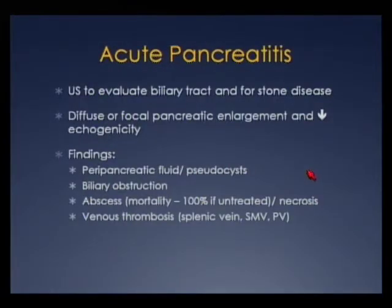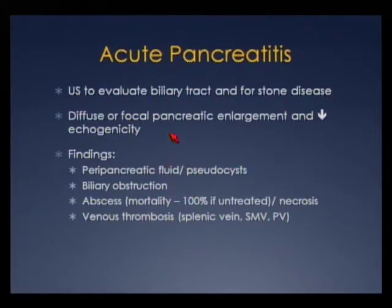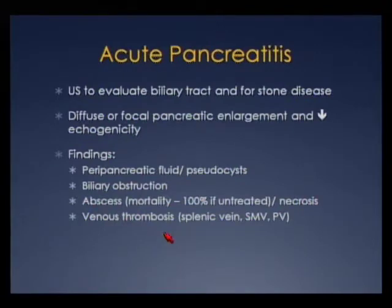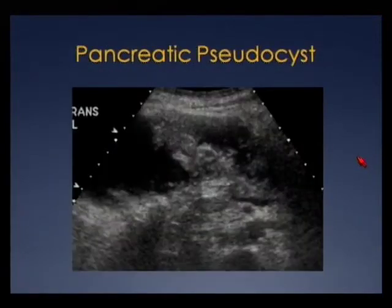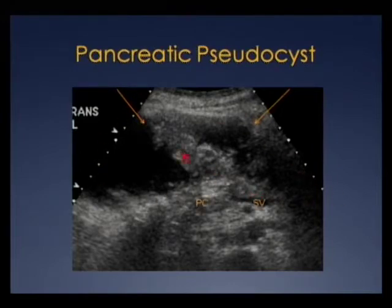Knowing midline anatomy is critical for assessing abdominal pathology. For acute pancreatitis, we don't use ultrasound for direct evaluation — CT is used — but we use ultrasound to evaluate the biliary tract for possible stones such as in gallstone pancreatitis. If we see the pancreas, it may be diffusely or focally enlarged with decreased echogenicity. We also look for peripancreatic fluid, pseudocyst formation, biliary obstruction, pancreatic abscess, and vascular complications. Here's an enlarged boggy hypoechoic pancreas in a patient with acute pancreatitis, and another case with a large complex fluid collection with debris — a pancreatic pseudocyst.